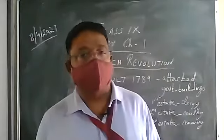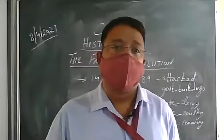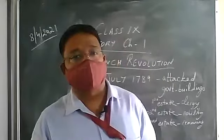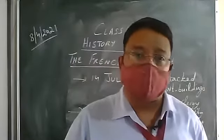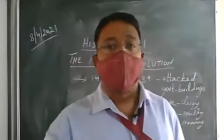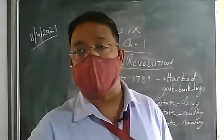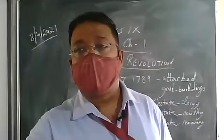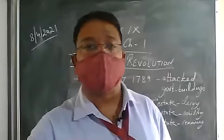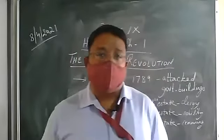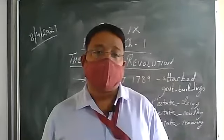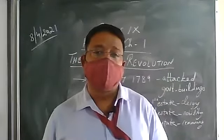We also talked about subsistence crisis — the condition of France was deteriorating. As the population was increasing, food grain was short, prices kept rising, and people did not have enough money to buy daily necessities. People were very angry, and that is also a reason why people revolted against the king and the French Revolution started.